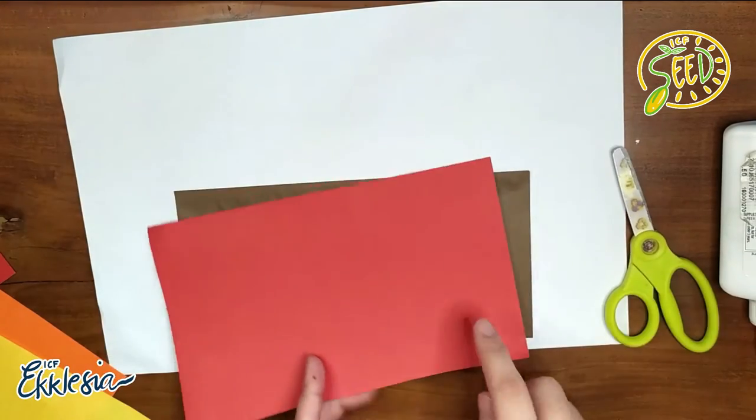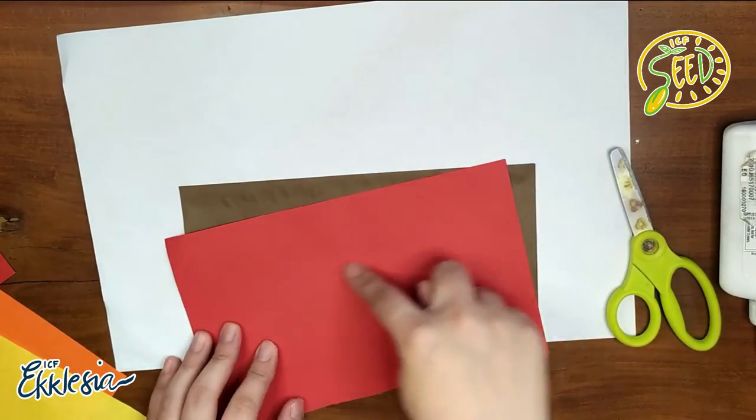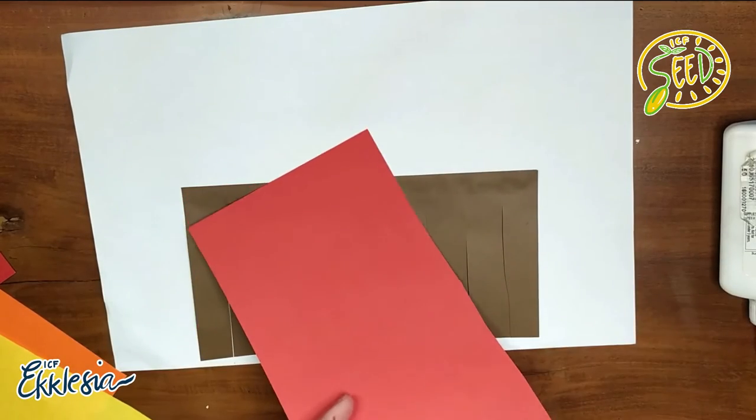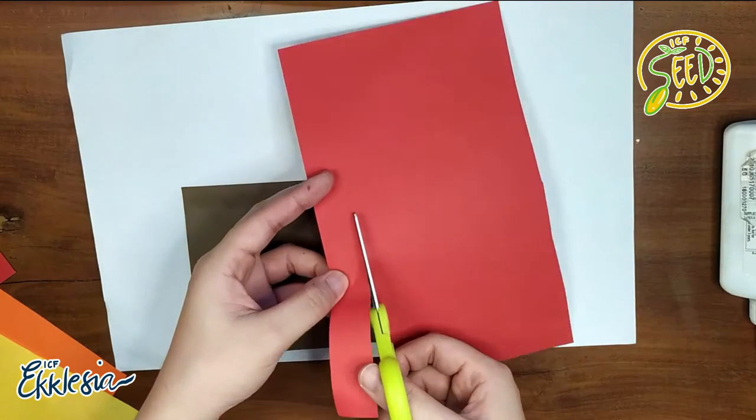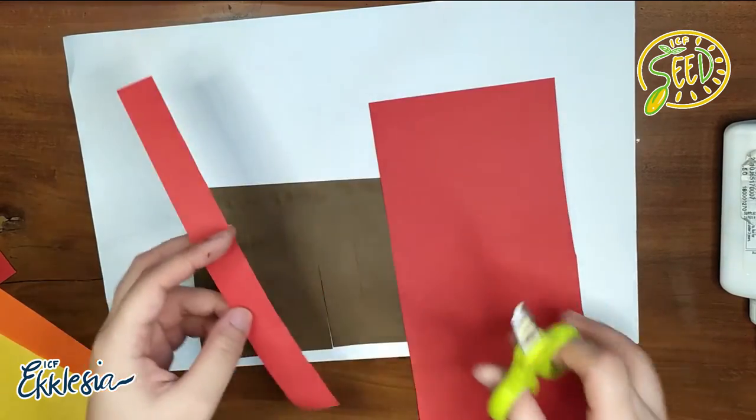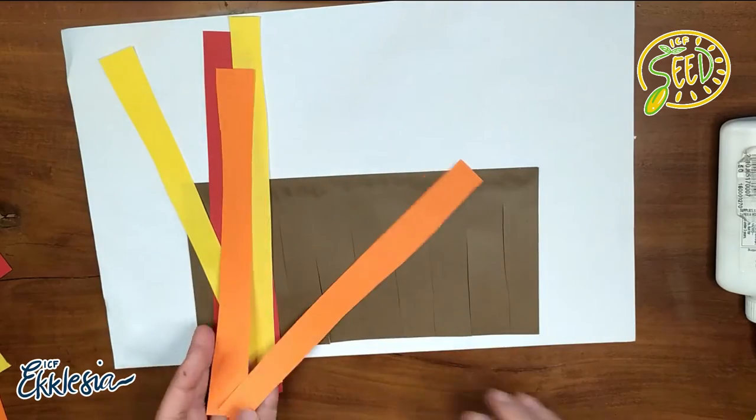Tapos, kunin yung colored paper. Tapos, mag-cut din ang strips. This time, sagad natin. Strips ng colored paper or magazines. Old magazines, ha? Yung hindi na natin kailangan.